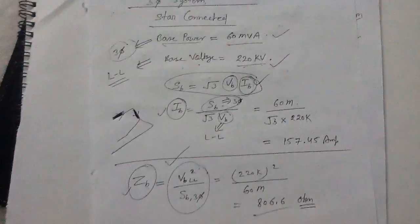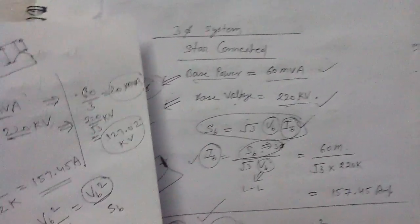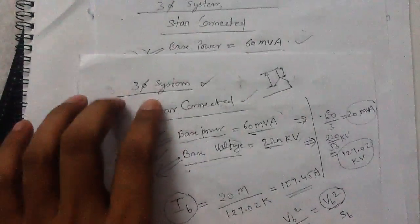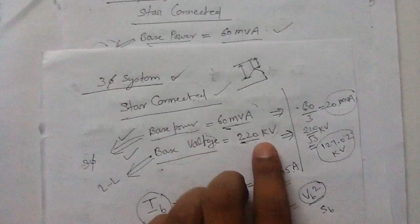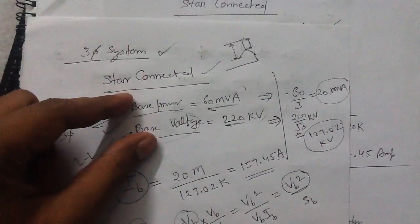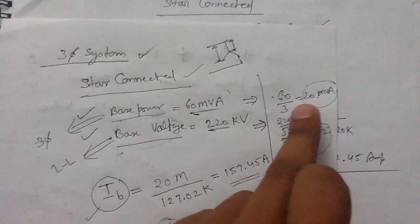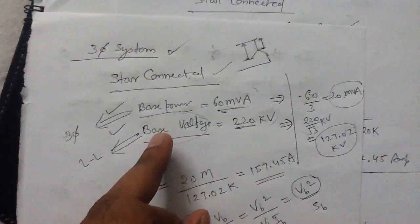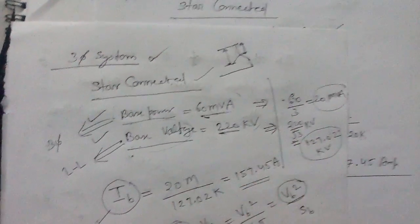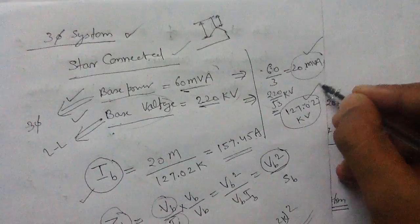I have also told you the conventional approach for the same problem in the previous video. The three-phase star-connected system has base power 60 MVA and base voltage 220 kV. In the previous video, I converted the three-phase system to a single-phase basis: the single-phase base power becomes 60 divided by 3, and the base voltage of the star-connected system becomes 220 divided by root 3 kilovolt, giving 127.02 kV.